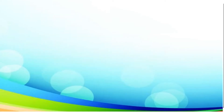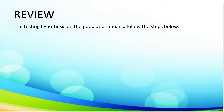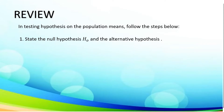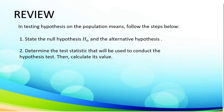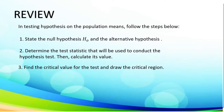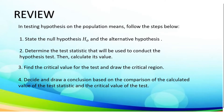Now let's take a review. In testing hypothesis on the population mean, follow the steps below. First, state the null hypothesis and the alternative hypothesis. Second, determine the test statistic that will be used to conduct the hypothesis test, then calculate its value. Third, find the critical value for the test and draw the critical region. And lastly, decide and draw a conclusion based on the comparison of the calculated value of the test statistic and the critical value of the test.